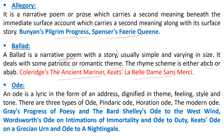Next, we will talk about ode. An ode is a lyric in a form of address — in an ode, we address something. It is dignified in theme, feelings, style, and tone. The poem is written in a lyric way, and the important thing is that it is written in a form of address with a dignified theme. There are three types of ode: Pindaric ode, Horatian ode, and modern ode.